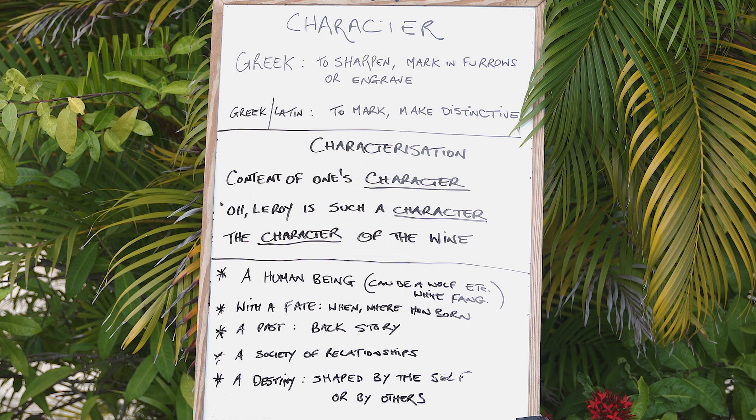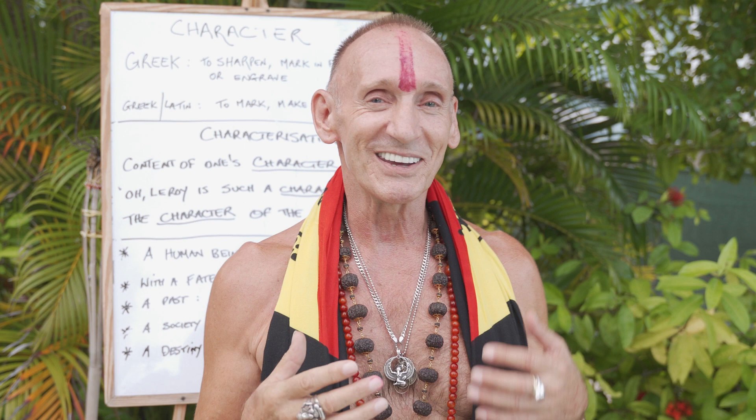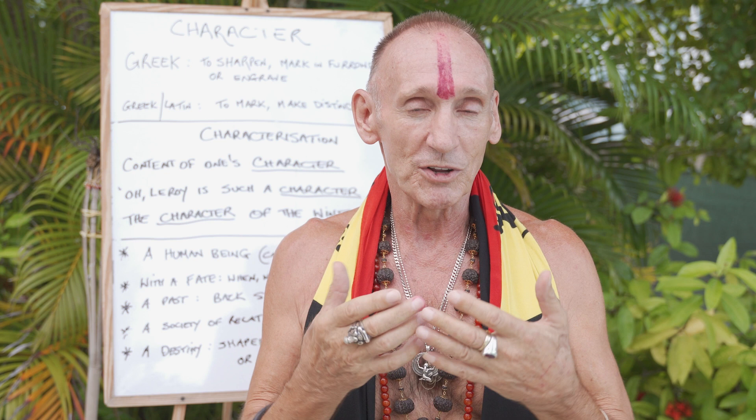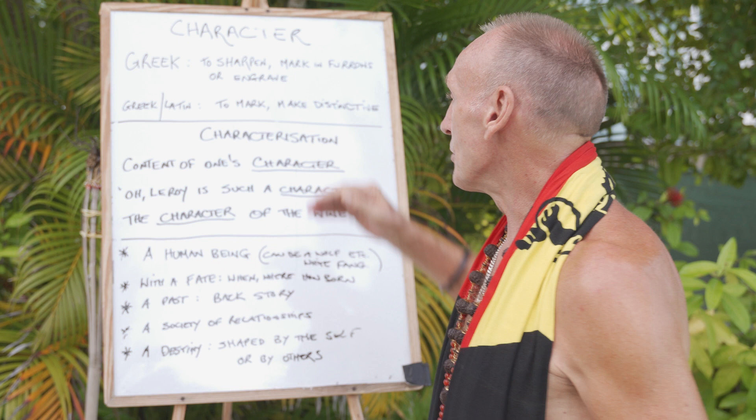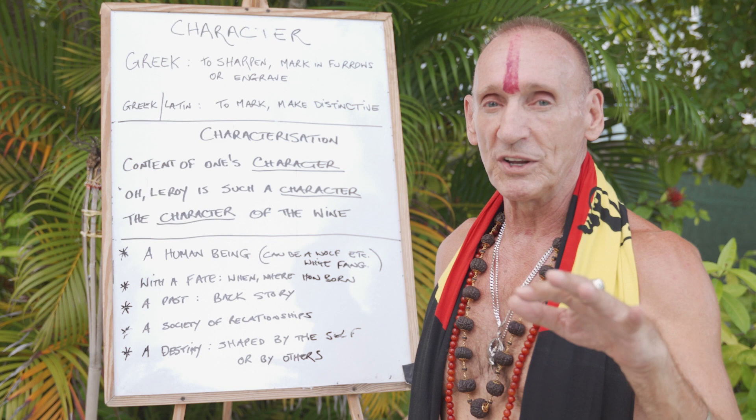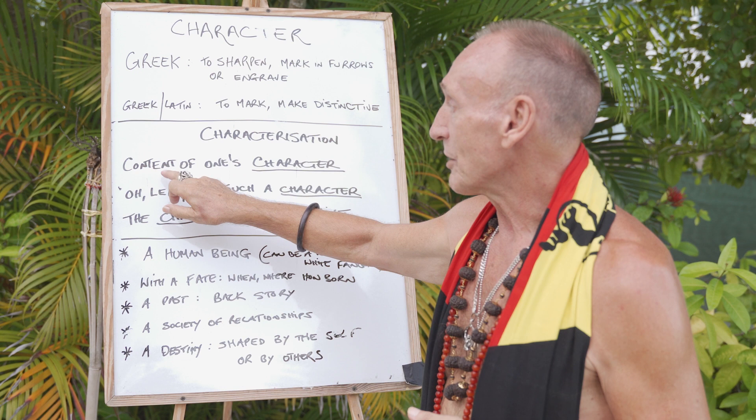From the original Greek, among other things, character means to sharpen, mark in furrows, or engrave. Think about that for a second. When you're creating a character, you're engraving on that character the various elements that bring that character to life, and engraving works with layers, with subtlety, and with the flow lines that work through the character. From that we get the Greek-Latin sense: character is to mark or make distinctive. From that sense of character we get characterization — things like the content of one's character.